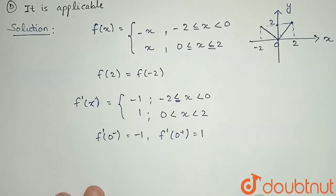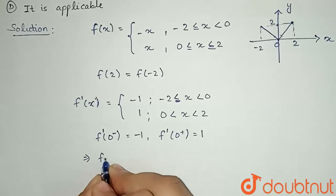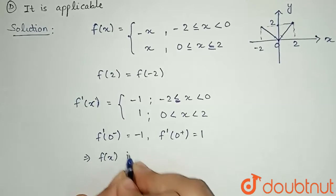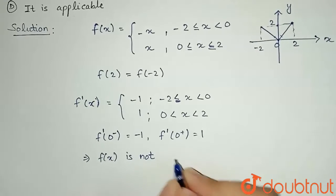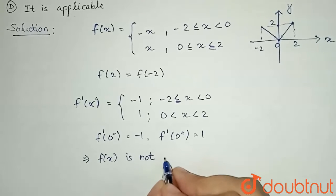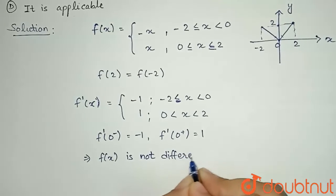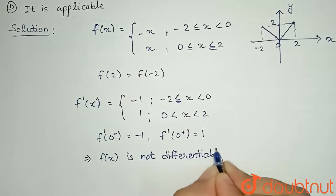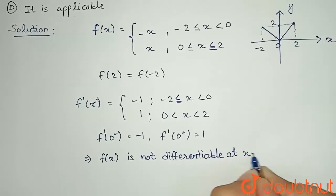So what we can see here? We can imply that f(x) is not differentiable at, see, only at one point. Not differentiable at x equal to 0.